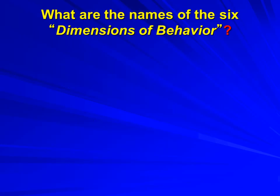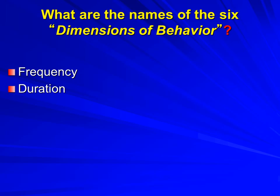We have six aspects, traits, characteristics — dimensions of behavior. What are some ways that behaviors can vary from each other? The frequency — how often the action occurs. You might also think of duration — the behavior can vary in how long it lasts. We might be recording the time, the latency, between the stimulus and a response: the time between the 'do it' and the person doing it.